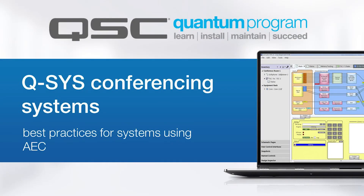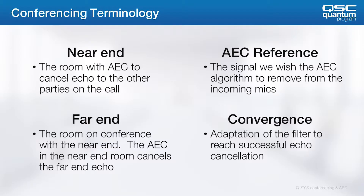Welcome back. Now that we've looked at the process in a little detail, let's look at some standard conferencing system terminology. Let's say that I'm in a room using a Q-SYS system for conferencing. I am what's called the near end. This means my AEC algorithm will cancel echo for the callers into my room. Note that the AEC used in my system doesn't help me — it's there only for the remote participants.